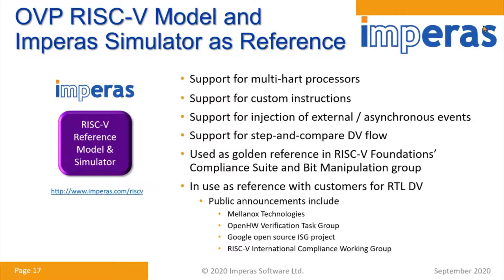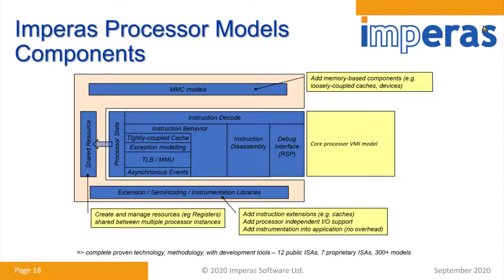We have our RISC-V model in Imperus used as a reference. We provide a version available in the compliance group, and a full commercial version that supports all the multi-hart stuff, allows you to add custom instructions, and inject asynchronous flows. Our model is pretty sophisticated — it's evolved over 12 years and wasn't originally targeting RISC-V. It's a sophisticated environment for developing models, and currently we've done over 300 different processor models, covering 12 public ISAs and 7 proprietary ones, of which RISC-V is just one.